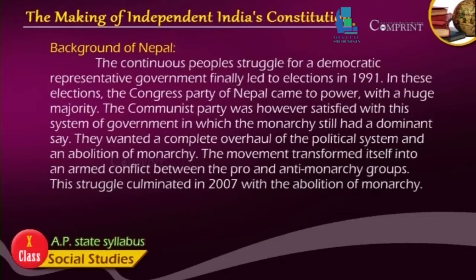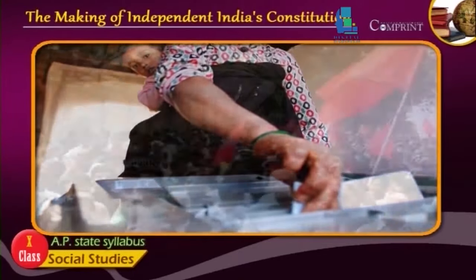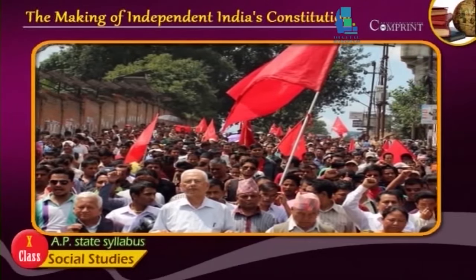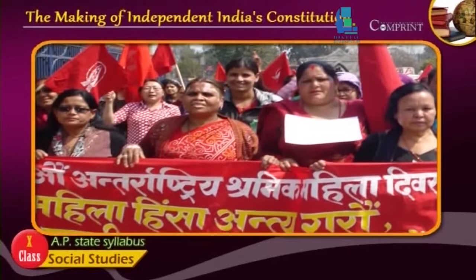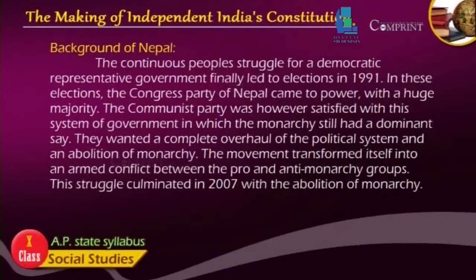Background of Nepal: The continuous people's struggle for a democratic representative government finally led to elections in 1991. In these elections, the Congress Party of Nepal came to power with a huge majority. The Communist Party was not satisfied with this system of government in which the monarchy still had a dominant say. They wanted a complete overhaul of the political system and an abolition of monarchy. The movement transformed itself into an armed conflict between pro- and anti-monarchy groups, culminating in 2007 with the abolition of monarchy.